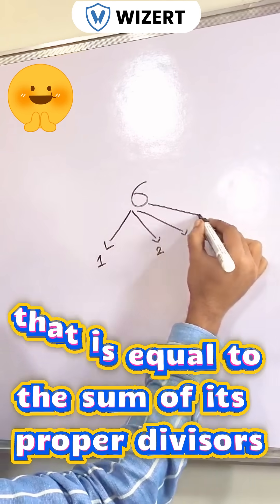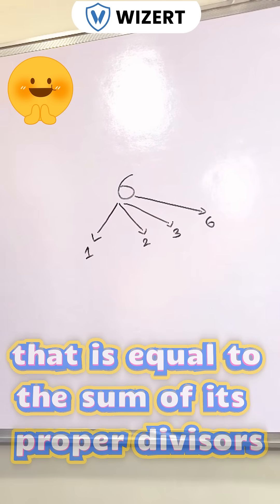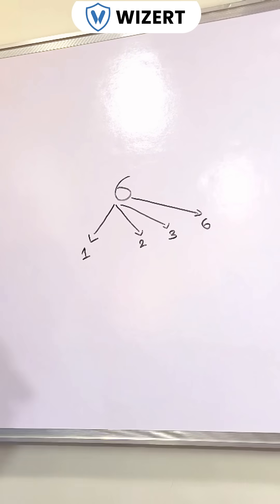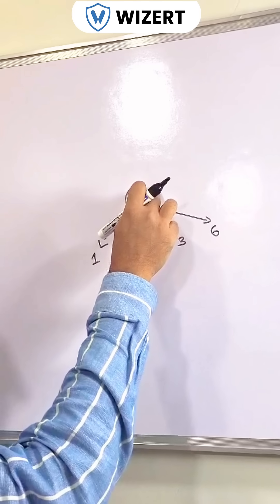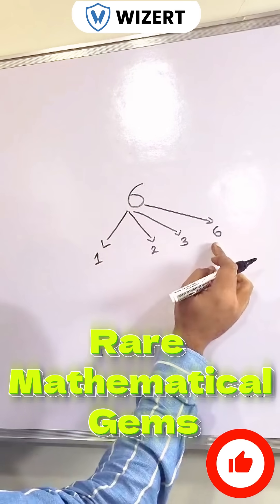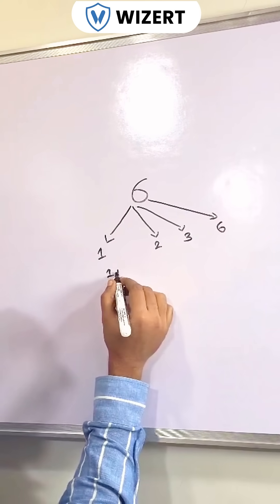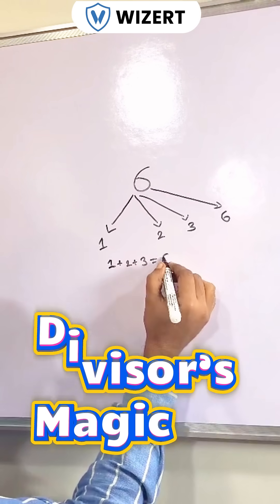Factors are those numbers through which the six will be completely divisible. Now if we can add those factors excluding the number itself—one plus two plus three—we will get six.